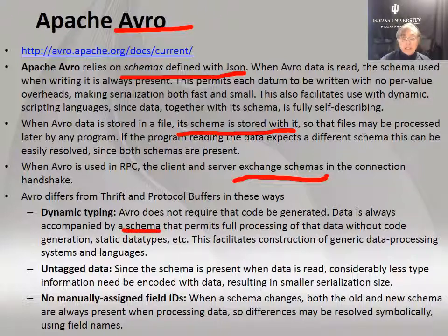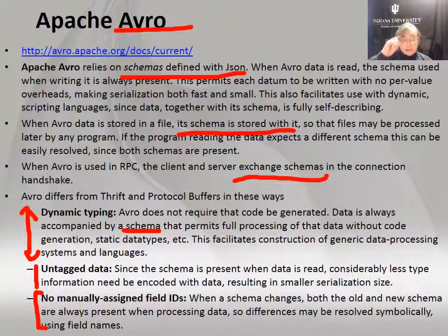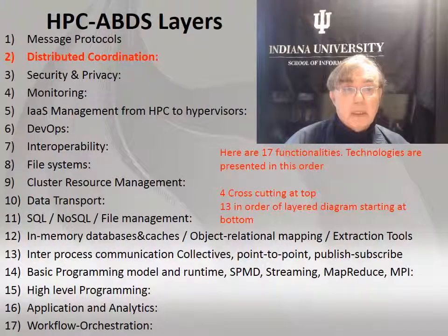The data is always associated with this schema, which is exchanged at the beginning. You can then process the data without generating code, allowing much more flexible dynamic typing for arbitrary classes with complex data structures. Because the schema is exchanged at the beginning, everything is written flat in a very opaque binary fashion which needs the schema to interpret it. Everything is labeled so that when you change the schema, you can do a translation between schemas. Avro has somewhat different trade-offs from Thrift but is trying to solve essentially the same problem.